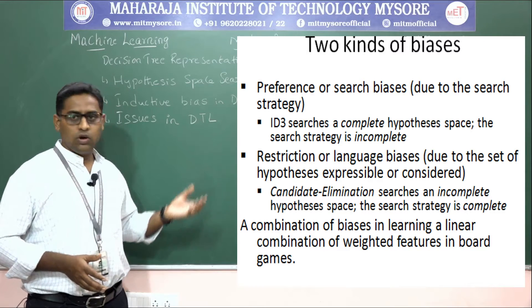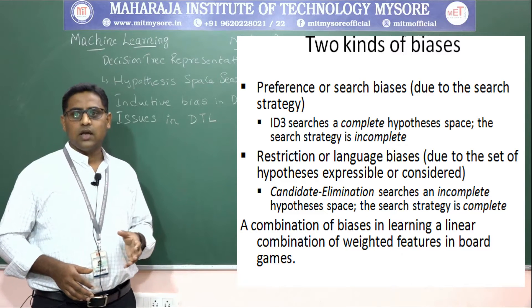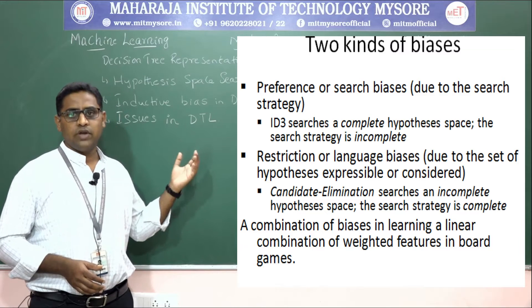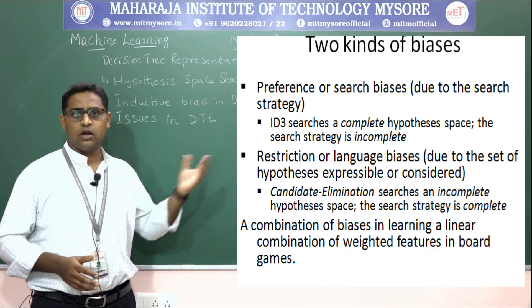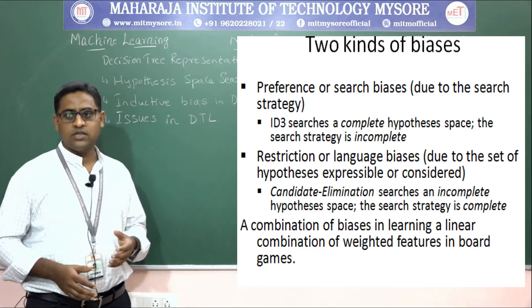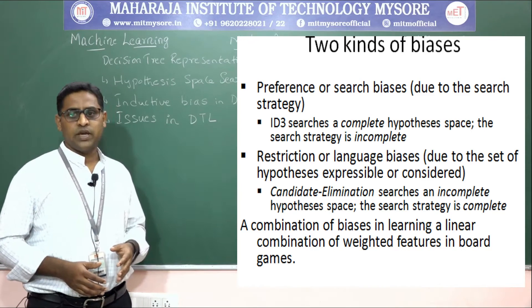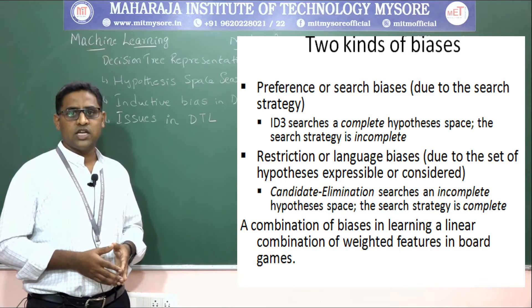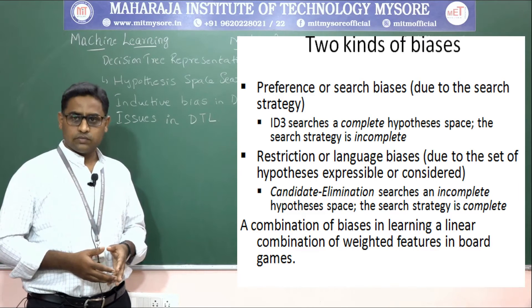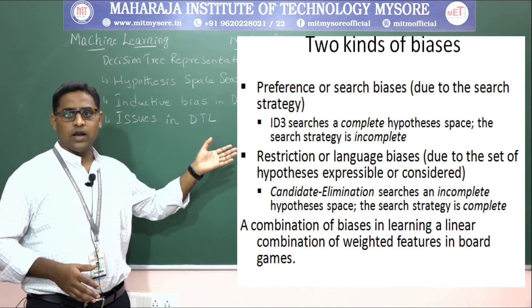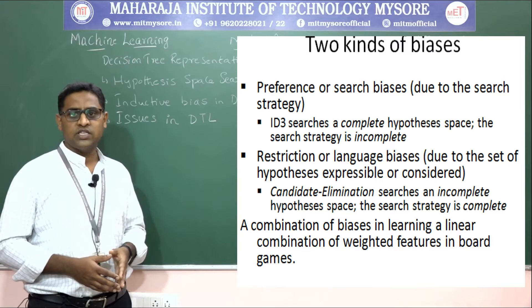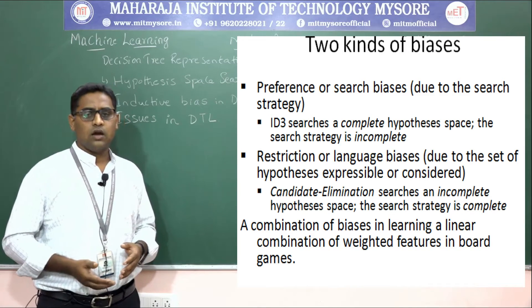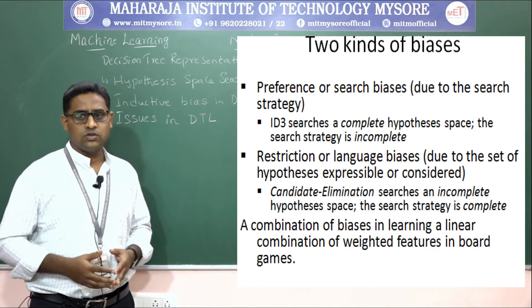For restriction bias, the candidate elimination algorithm is used, which operates with an incomplete hypothesis space but a complete search strategy. In contrast, ID3 has a complete hypothesis space but an incomplete search strategy. The combination of both biases — as in learning a linear combination of weighted features — is well suited for applications like board games.